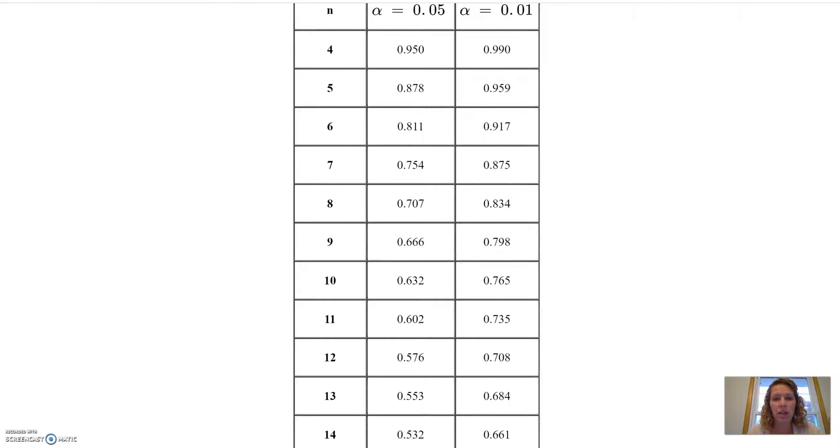On our chart, we look at the second column, alpha 0.05. We go down to the row where n is 10, and we're going to get 0.632. Remember, this is going to be plus and minus since it's two-tailed, the critical values are ±0.632.